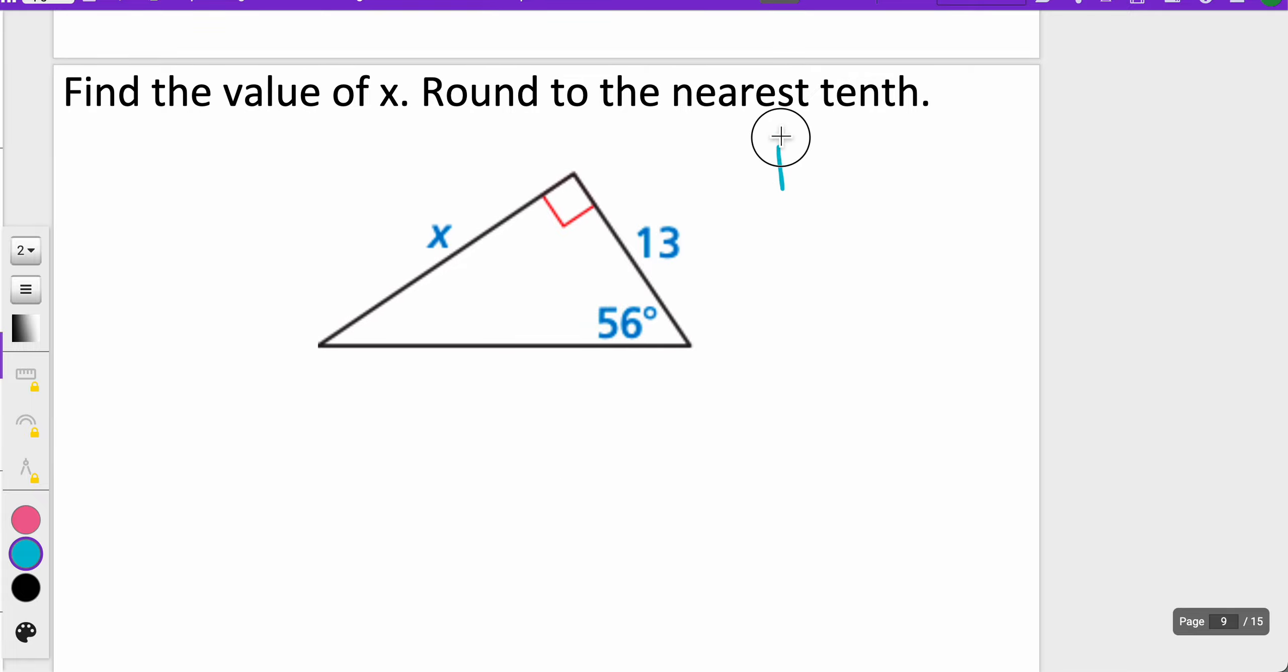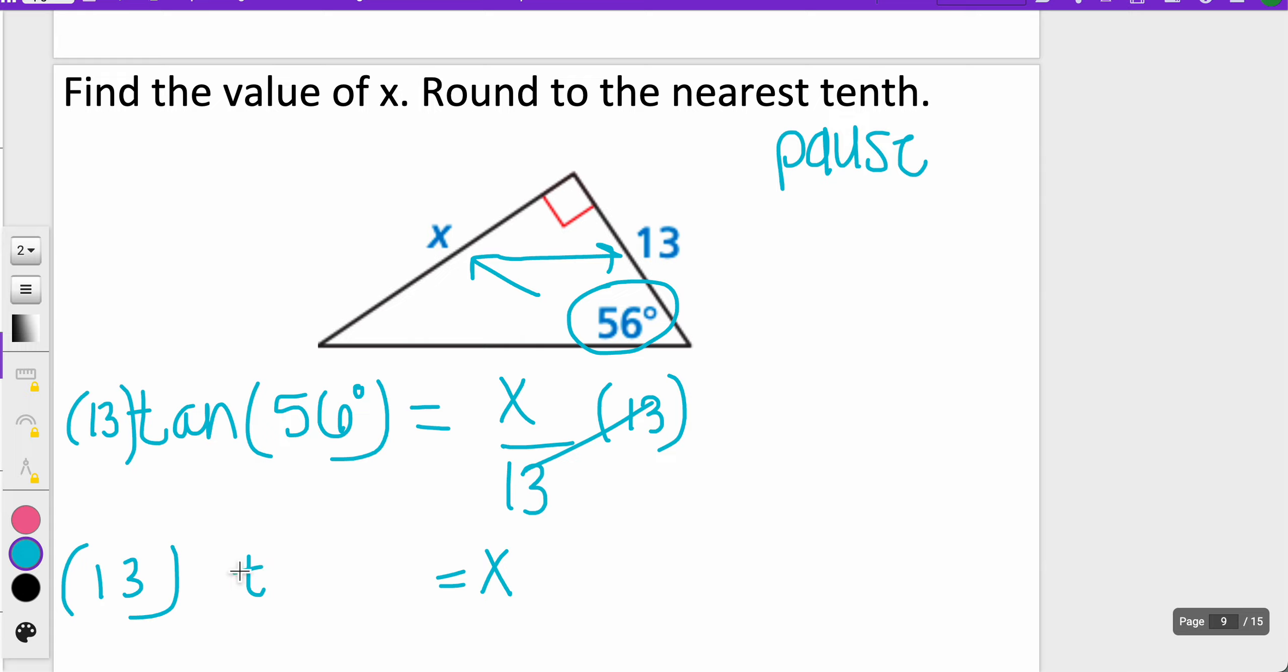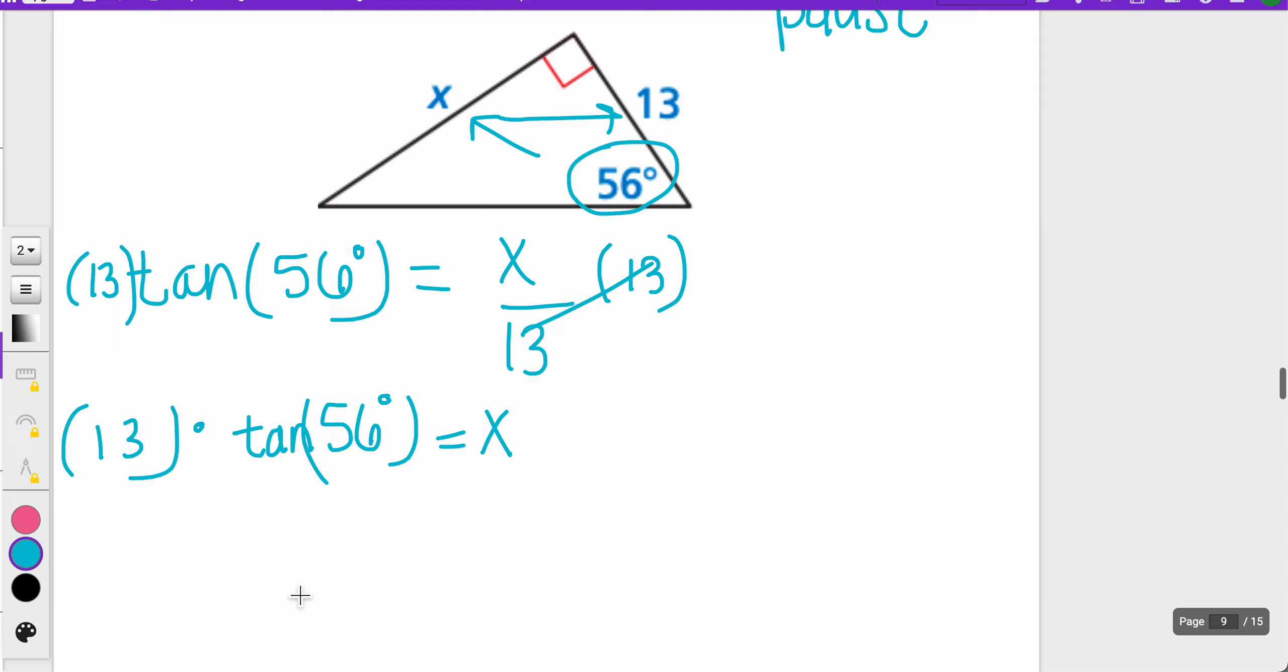One more. Maybe pause and try this one on your own. See if you can work that out with your scientific calculator. I'm given my tangent of 56 degrees, and that is opposite over adjacent. So X over 13. In this case, I'm just multiplying both sides by 13 to get X by itself. These 13s will cancel, so X is equal to whatever 13 times the tangent of 56 degrees is. And that calculation would be about 19.3. I'm rounding these to the nearest tenth.